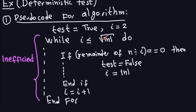Since that divisor i is less than the square root of n, the number must be composite, not prime. So we update 'test' to false and set i equal to the absolute value of n to exit the while loop. If no divisor is found, we simply increment i, checking all integers from 2 up to the square root of the absolute value of n.